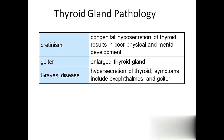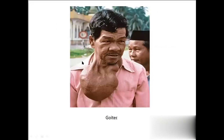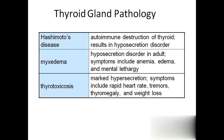Thyroid gland pathology: cretinism is caused by hyposecretion of thyroid hormones, resulting in poor physical and mental development - the baby will be like a mentally retarded child. Goiter is enlargement of the thyroid gland, presenting as a bag-like extension near the neck region. Graves' disease is hypersecretion of thyroid with symptoms including exophthalmos and goiter - goiter can occur in both hypothyroidism and hyperthyroidism. Hashimoto's disease is an autoimmune disease where destruction of the thyroid gland causes decreased secretion. Mixed edema is also a hyposecretion disorder with symptoms of anemia, edema, and mental lethargy.